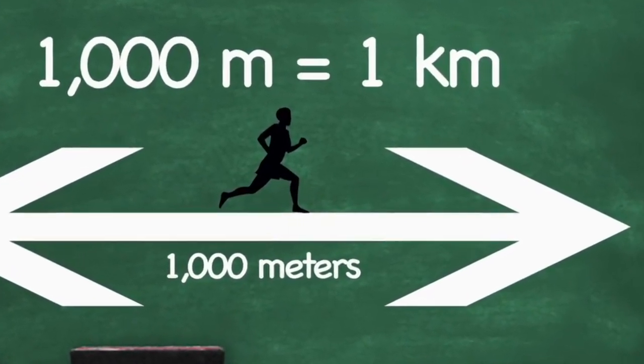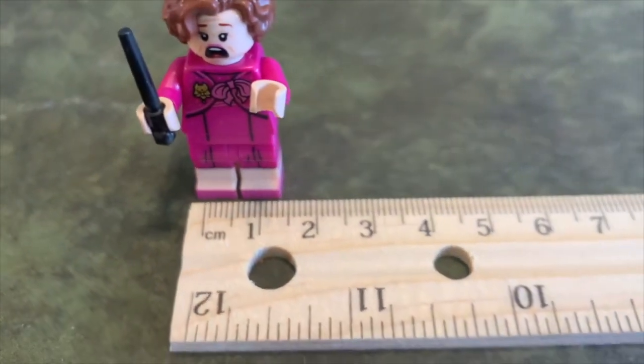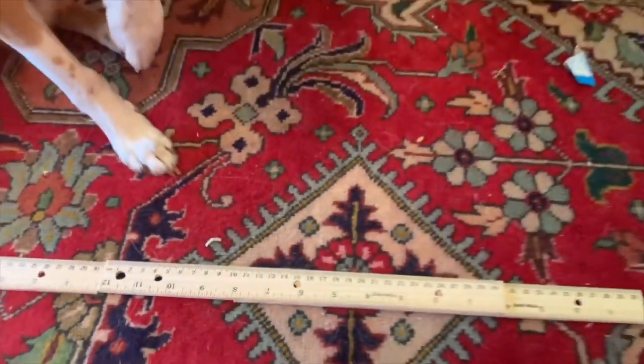One more time, maybe more. 10 millimeters equals 1 centimeter. 100 centimeters equals 1 meter. 1,000 meters equals 1 kilometer. That's right.